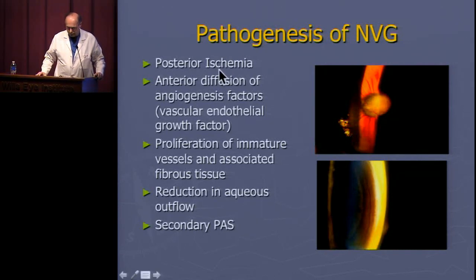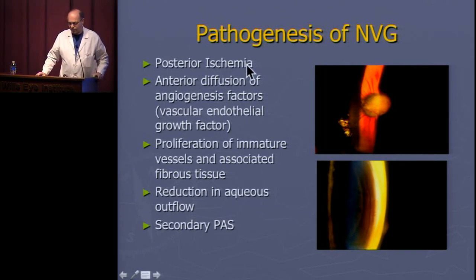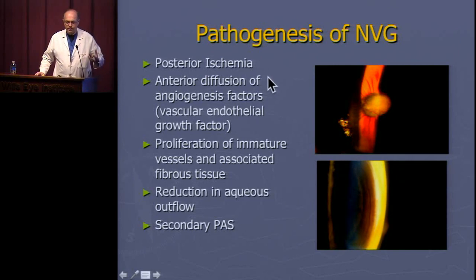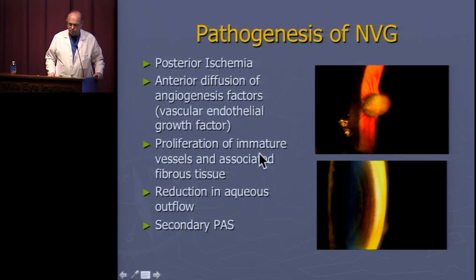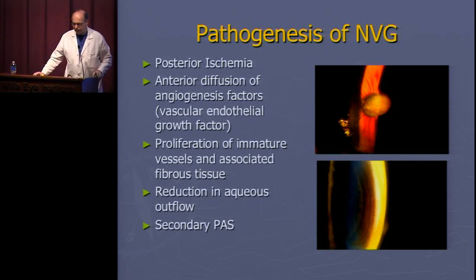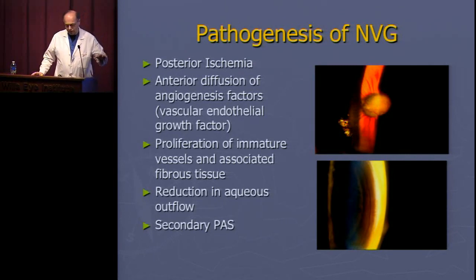The theory behind anterior neovascularization is that with ischemic insult to the eye, especially posteriorly, angiogenic factors — vascular endothelial growth factor — diffuse anteriorly. Anti-VEGF targeting counteracts these angiogenesis factors. Once they reach anteriorly, new vessel formations occur, PAS develop across the angle, and aqueous outflow is reduced.